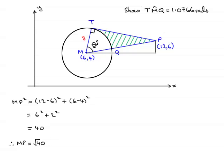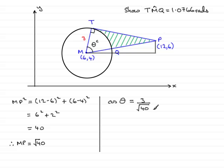When it comes to finding the cosine of this angle, the cosine of theta will be equal to the adjacent side MT, which is 3, over the hypotenuse MP, which we now know is the square root of 40. So to get theta, we just do the inverse cos of 3 over the square root of 40. You must remember to work this out in radians mode on your calculator — make sure your calculator is in radians mode.